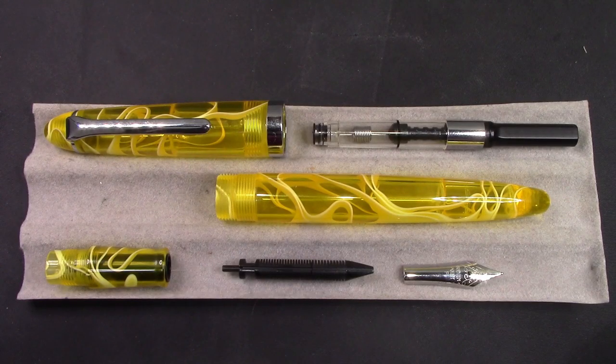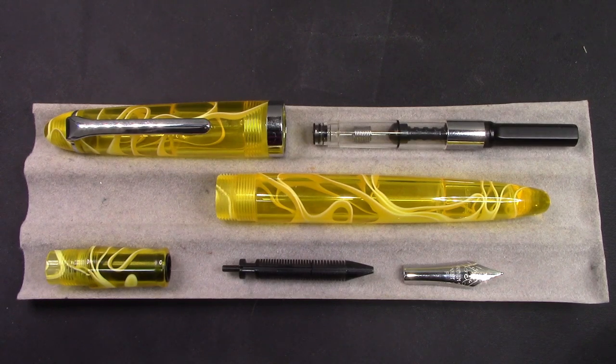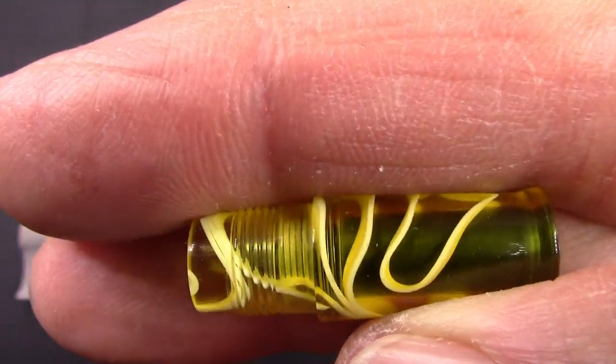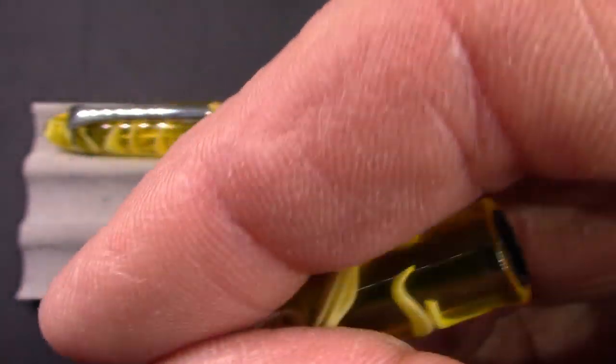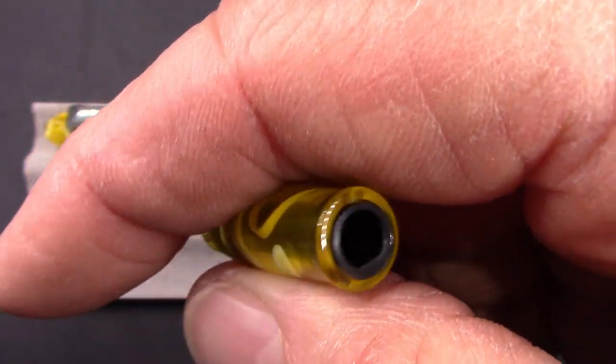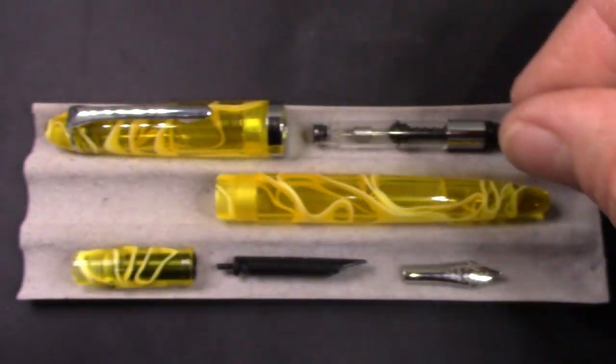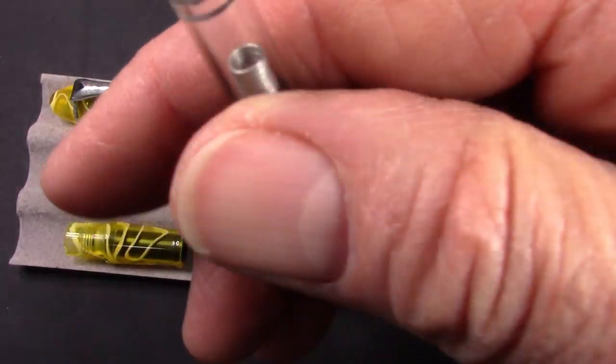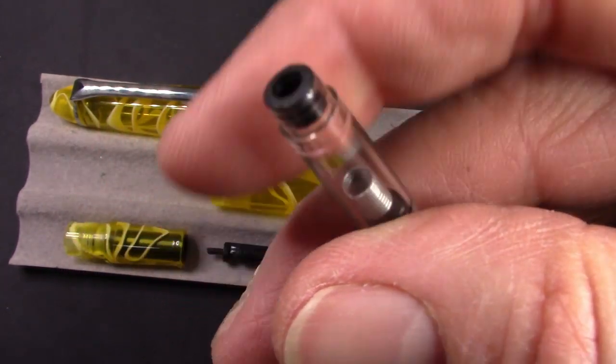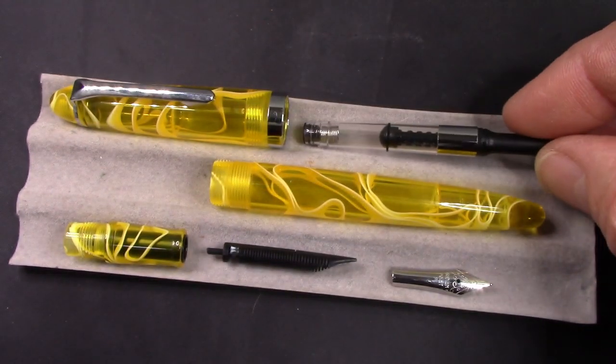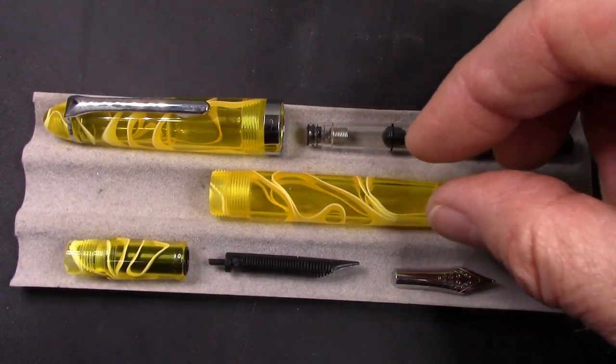Here we are with the pen disassembled as much as I'm going to disassemble it. I pulled the nib and feed out. It looks like it has a nib assembly which should unscrew. There's the threads. It has a flat section in it so the feed is only going to go in one way and it keeps things in orientation. Originally I looked at the converter and I said, looks like a pen BBS converter, but unfortunately that opening is just slightly smaller than a pen BBS opening. I'm not going to go through my converters to see what else might fit.